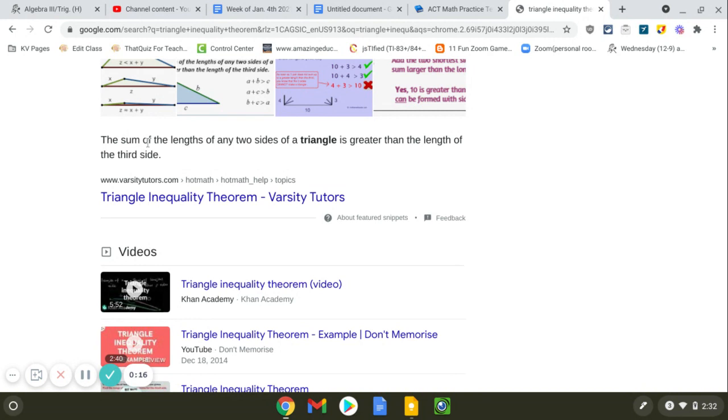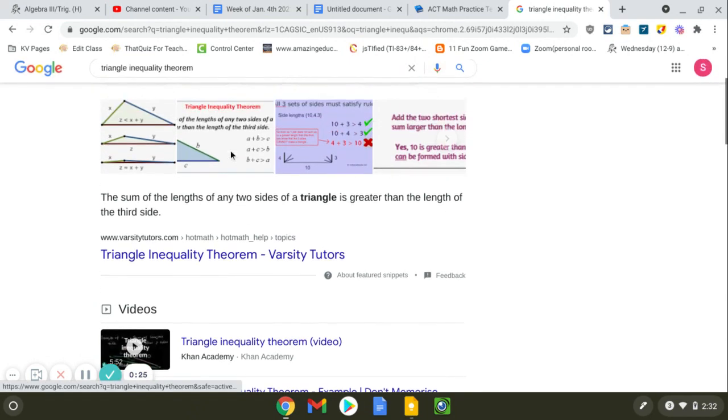Here we go. The sum of the lengths of any two sides of a triangle has to be greater than the length of the third side. So you can't have one side of a triangle be longer than the sum of two other sides.